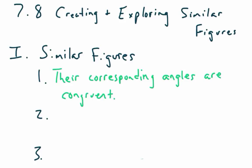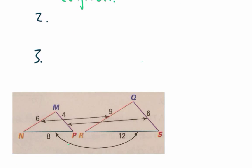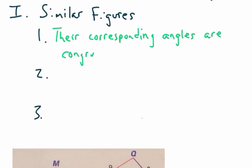So what do I mean by that? If we have these two triangles as similar figures, and I go through and measure angle M and angle Q with a protractor, I should get the exact same thing. Same thing for angle N and angle R — those two would be the same — and angle P and angle S. Corresponding angles just means the angles that are in the same place, like the angle between the longest side and the shortest side. The corresponding angles are congruent.